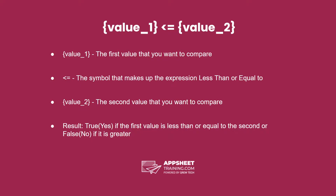The syntax is the first value followed by the symbol less than, then equal to, and then the second value that you're comparing the first one to. The result is true or yes if the first value is less than or equal to the second, but false or no if it is greater than.